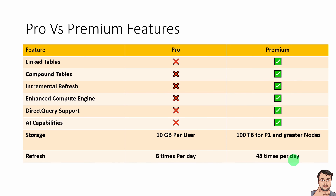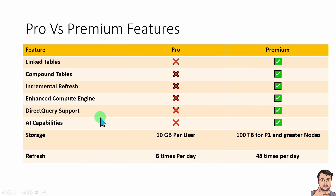So that is the feature comparison. Most of these Premium features apply to both Premium capacity and Premium Per User, so to test them out you will need Premium Per User. Enhanced Compute Engine and Direct Query support are the two features I will cover in the last episode of this series, while Incremental Refresh and AI capability are topics I will cover in an advanced series.